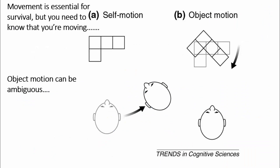Movement is essential for survival of animals in an environment, but we need sensory information to know that we're moving. We also need sensory information that can be unambiguous, so we need a way of telling the difference between when the environment or something in the environment is moving and when we're moving, since otherwise we can get our own motion confused with the motion of objects in the environment.